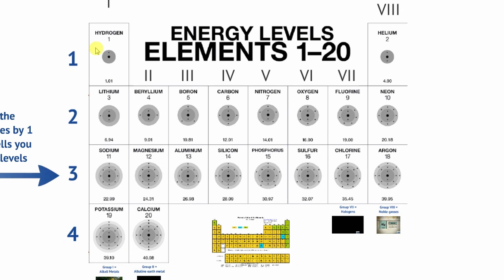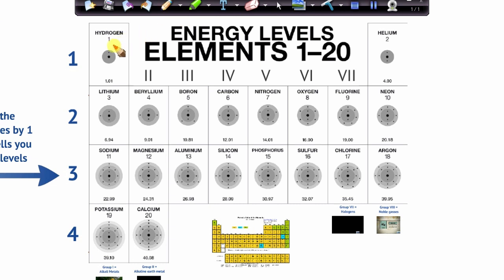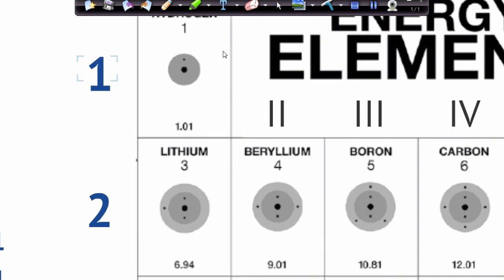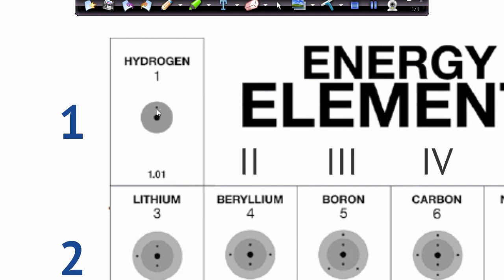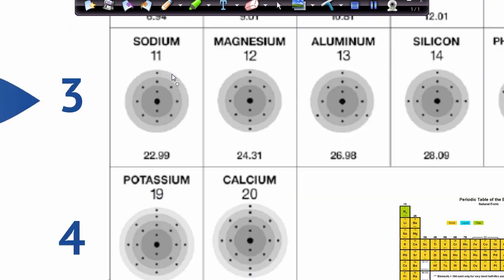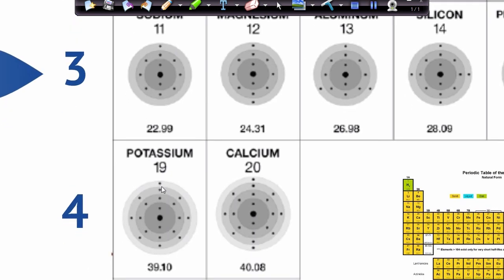Looking at our group 1 elements — the alkali metals — they're highly reactive. They're all basically trying to lose that one spare electron so that they have a full outer shell. It's easier for them to lose one electron, since the next shell is already full, than to try and gain seven electrons. The reason reactivity increases as we go down the group: looking at hydrogen, it has one proton and one electron, and that electron is strongly attracted to the nucleus and held quite tightly. In potassium, this electron is much further away from the nucleus, which already reduces the hold on it.